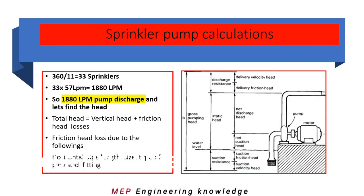Let us have an example: the area of operation is 360 square meters and we are using sprinkler coverage averaging 10 to 12 square meters. So 360 divided by 11 gives 33 sprinklers. We know each sprinkler will have 57 LPM discharge, so when we multiply we get 1880 LPM — that is the pump discharge we need to select.